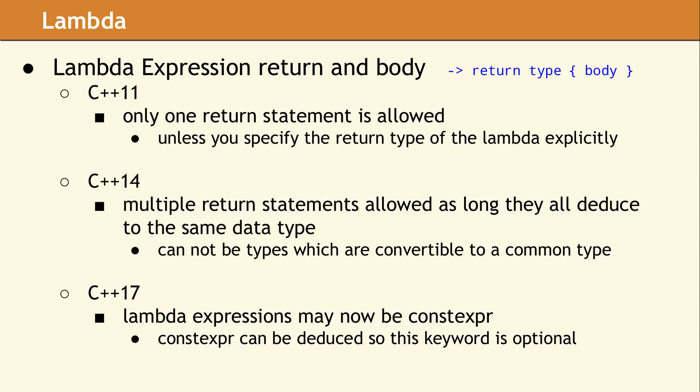The return type in a lambda expression is optional, as long as the compiler can deduce the return type from the return statement in the lambda body. In C++11, the compiler can only deduce this return type if there are 0 or 1 return statements. In C++14, you can have multiple return statements in the body, as long as they all deduce to the same data type. One advantage of specifying the return type means you are not depending on the type deduction rules. This allows implicit conversions in the return statement.